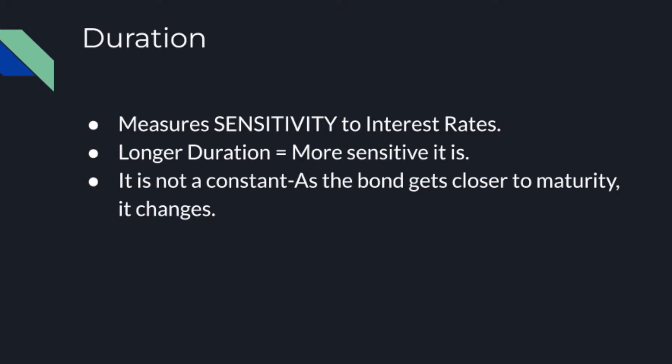Duration is a measure of the sensitivity to interest rates. So if you have a bond that says its duration is five years, that doesn't mean that at the end of five years you're going to get your money back with interest payments and so forth. That's just telling you what the duration is and how sensitive it is to interest rates. The longer the duration is, the more sensitive the bond is to interest rates.